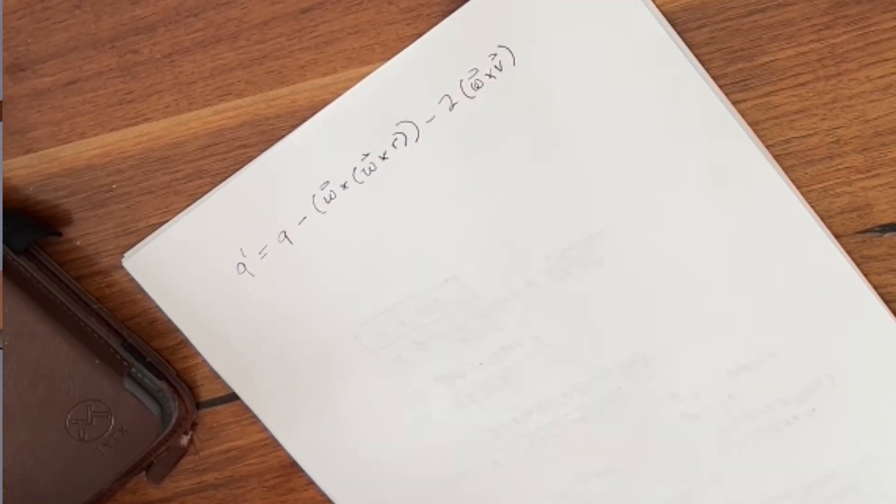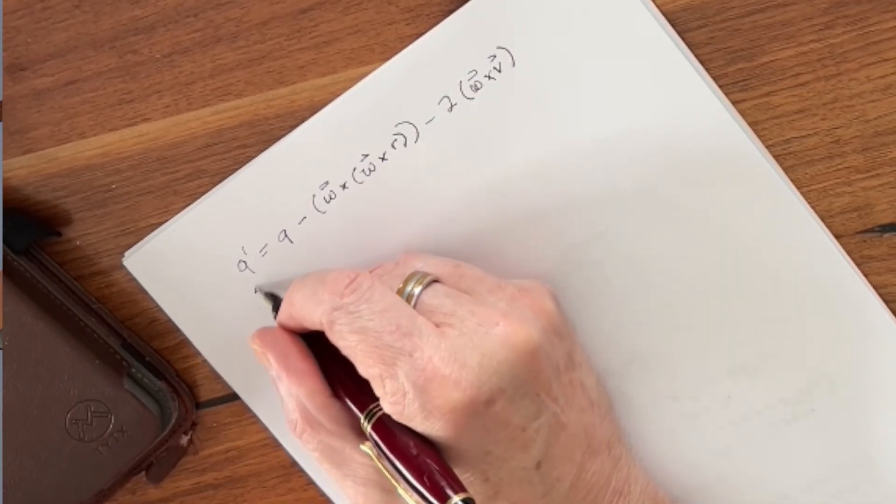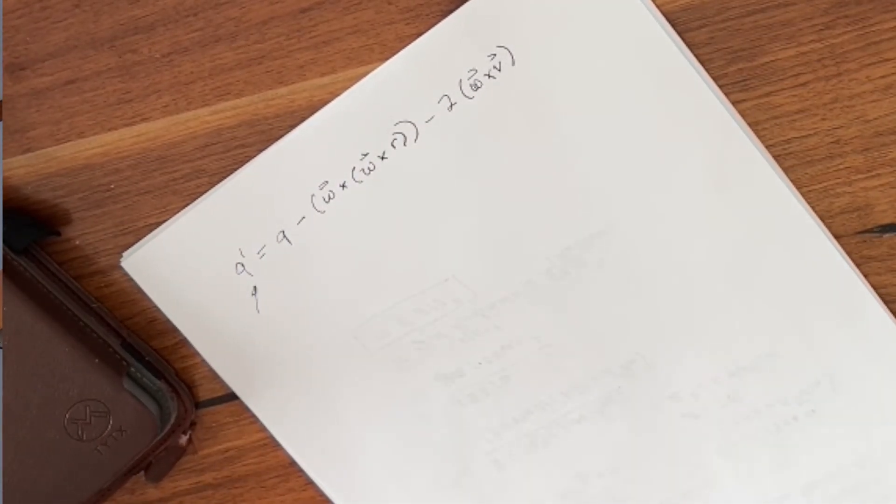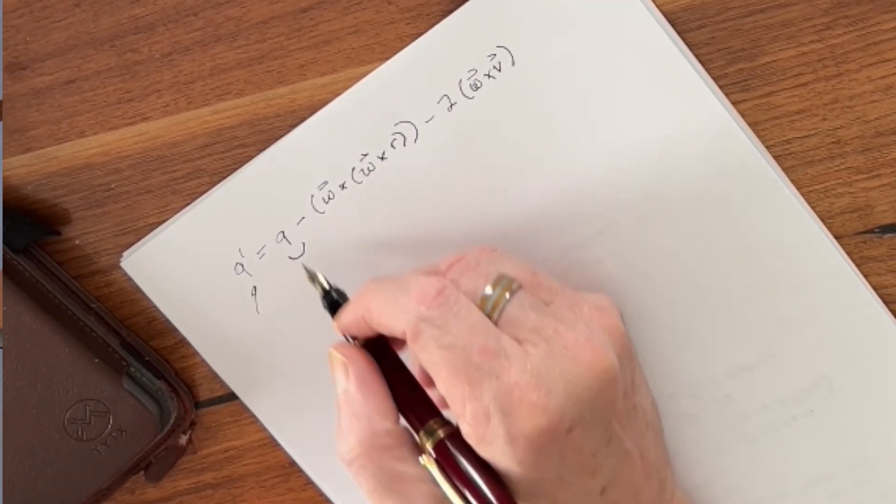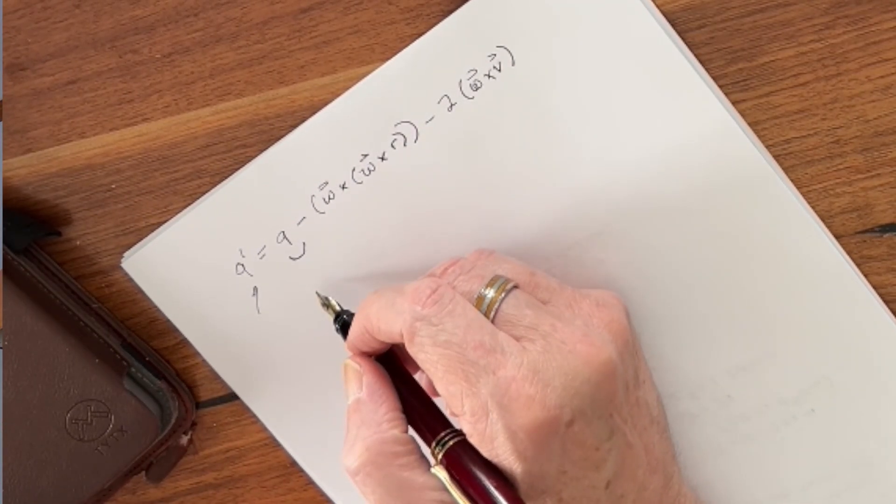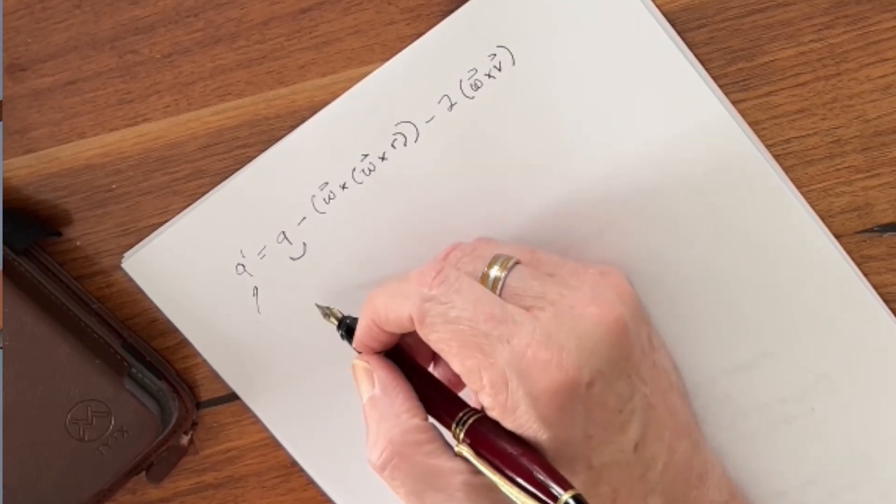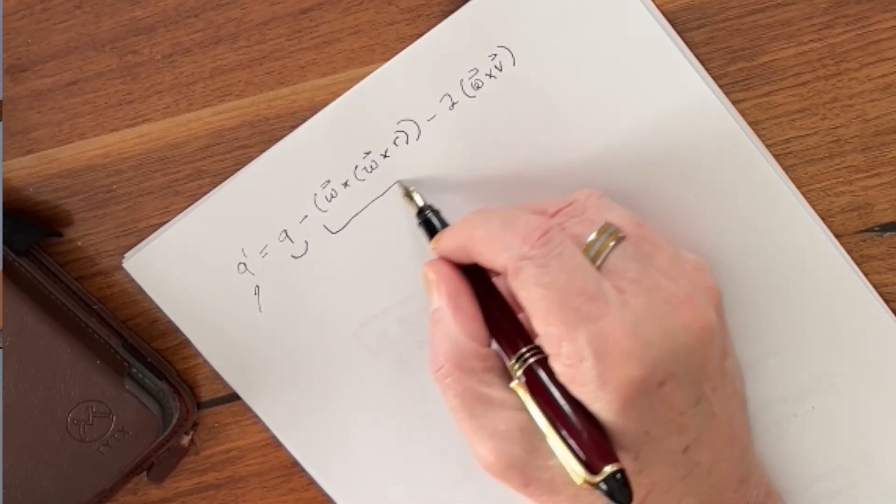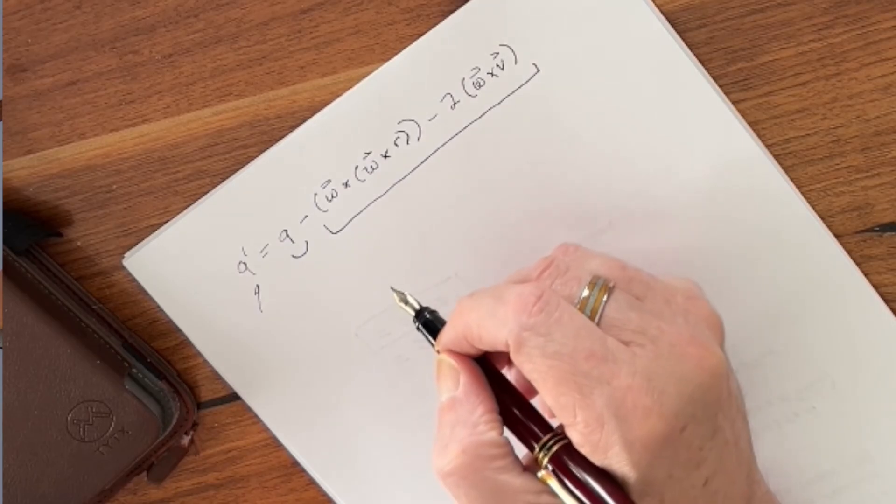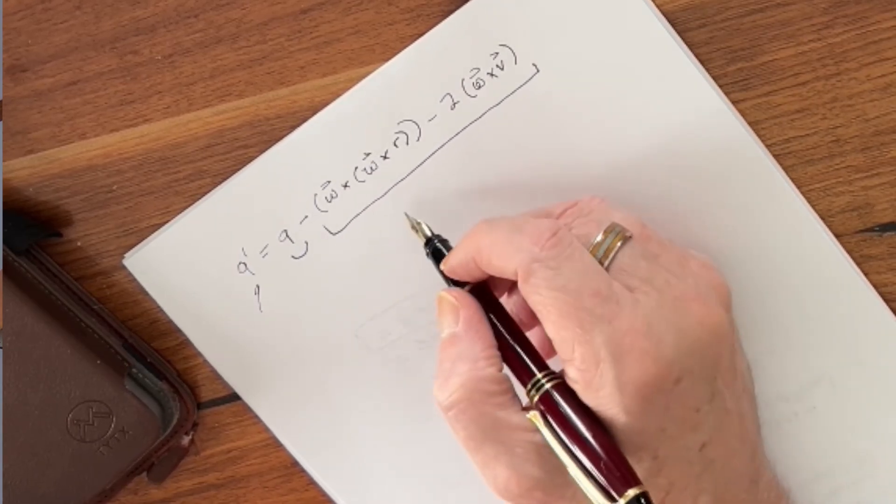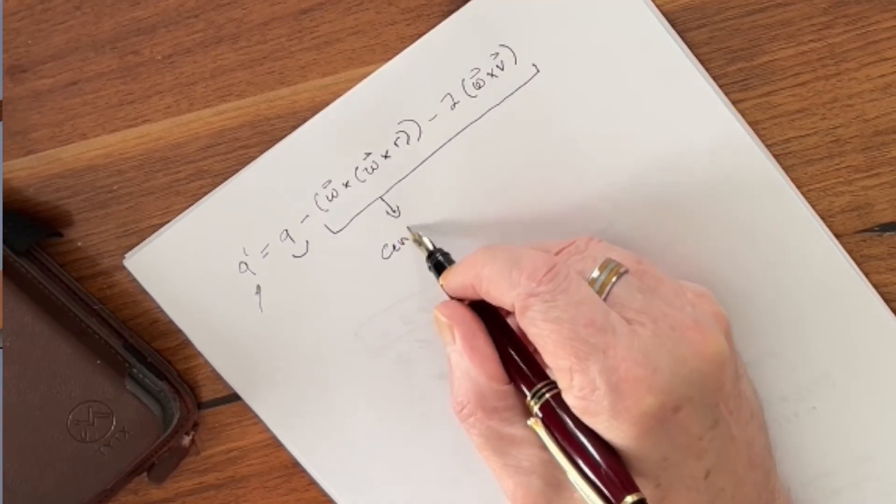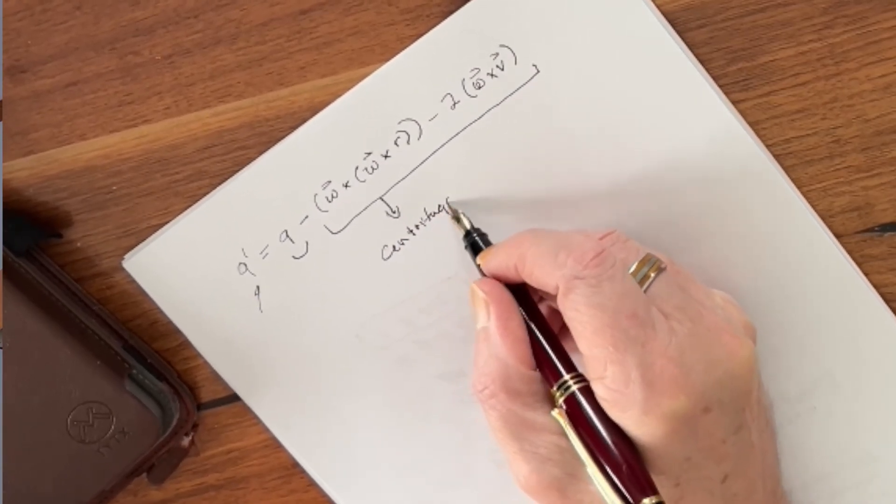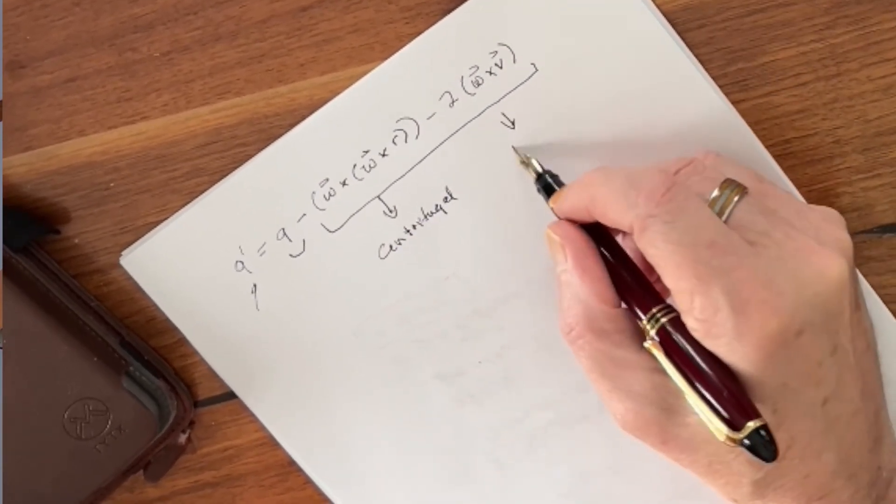Now, in our last video on the effective force of gravity, which is this G prime here, we realized that that had to do with the actual force of gravity, the Newtonian force of gravity, which is the downward acceleration caused by the gravitational attraction of the Earth, minus two non-Newtonian forces. And these were the forces of centrifugal force and Coriolis.